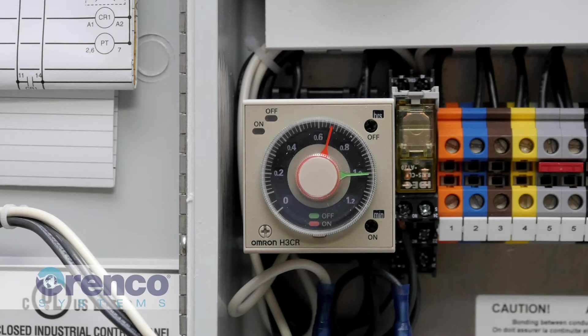There are four parts to the Omron H3CR timer that you'll need to be familiar with when attempting to set the on and off cycles.